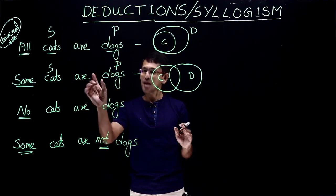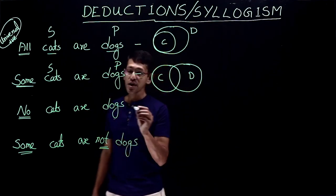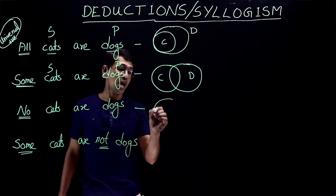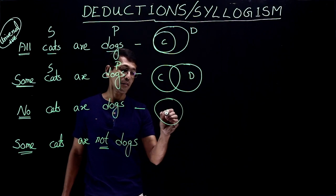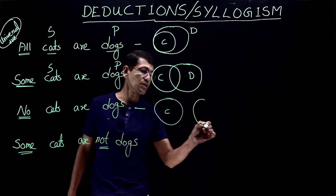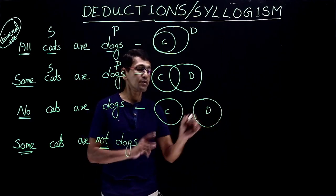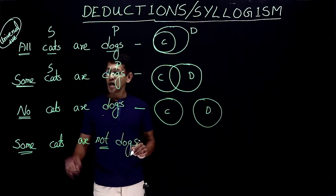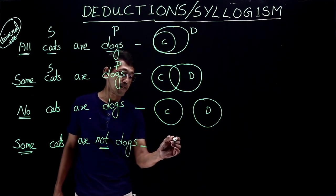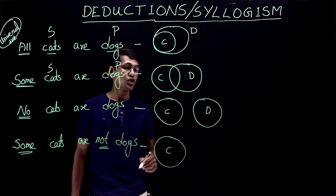We need some cats, so there must be a little bit of intersection. Now for no cats or dogs — how do we draw it? No cats, so cats and dogs: not a single cat is a dog. That means there is no intersection between cats and dogs — two separate diagrams. And for some cats are not dogs, if you take some cats they are not dogs.